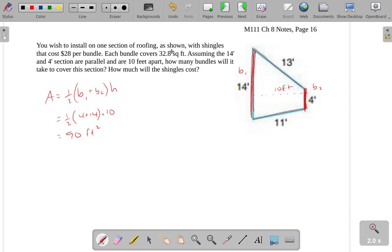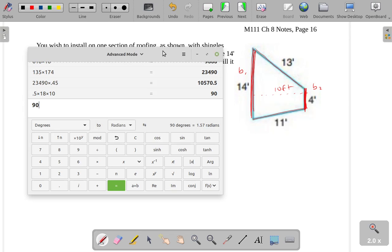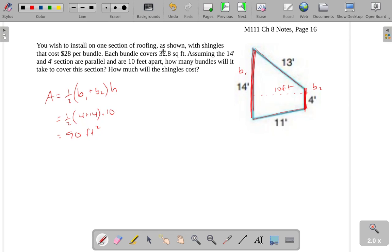Each bundle covers 32.8 square feet. So we'd want to figure out, okay, how many bundles is this going to take? Well, this number divided by 32.8 gives us 2.74 bundles.